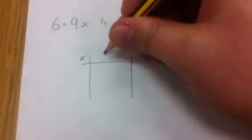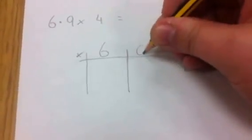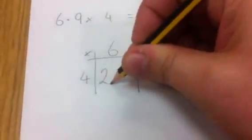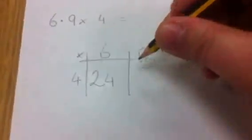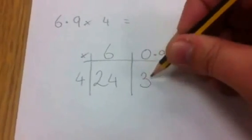the first thing I do is partition the number: 6 and 0.9 multiplied by 4. 6 times 4 is 24. 4 times 9 is 36.